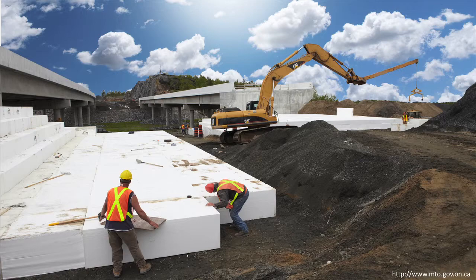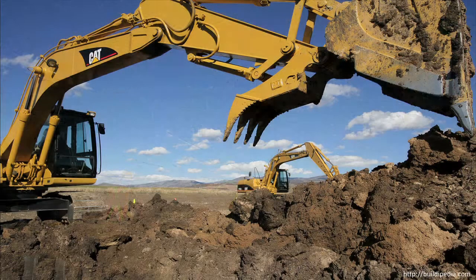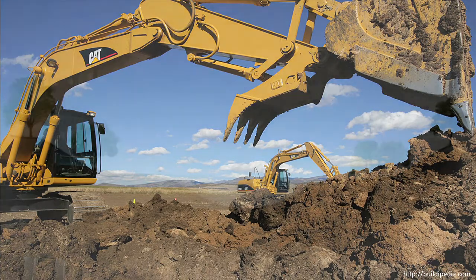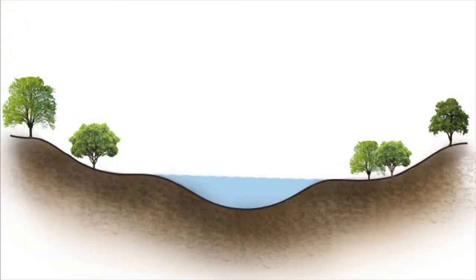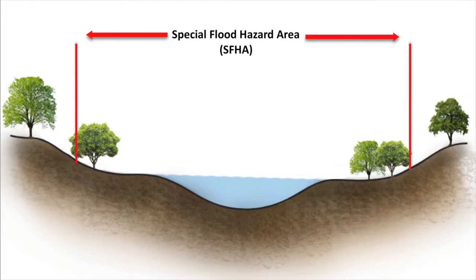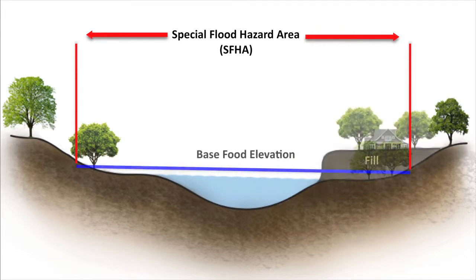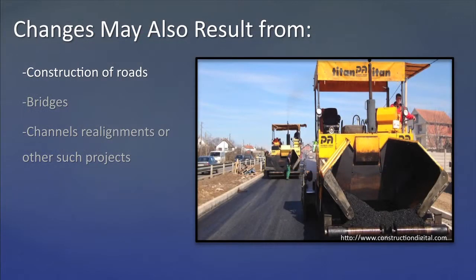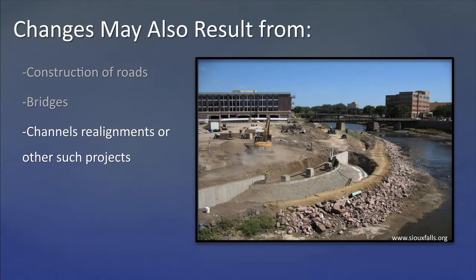Physical changes, such as filling, grading, or excavation, might be made to the floodplain after the creation of FIRMs, such that a building site or larger area originally shown to be in the Special Flood Hazard Area now sits on ground that is above or below the base flood elevation. Changes may also result from the construction of roads, bridges, channel realignments, or other such projects that physically alter the hydraulic characteristics of the stream channel and floodplain.